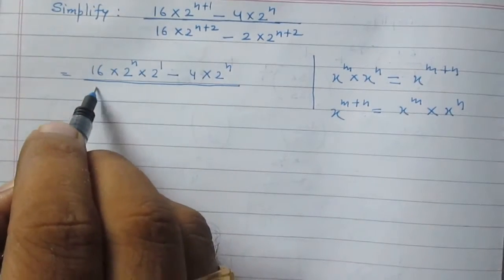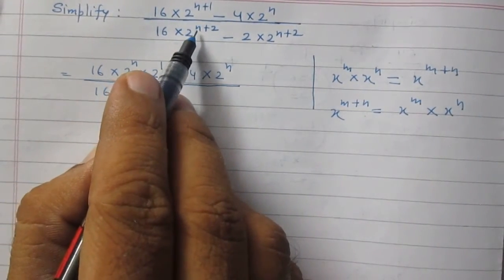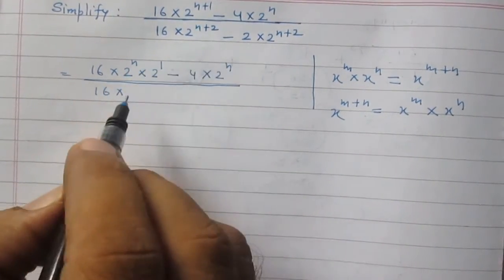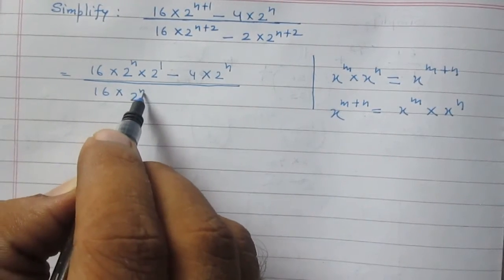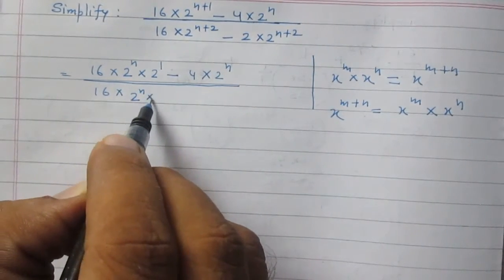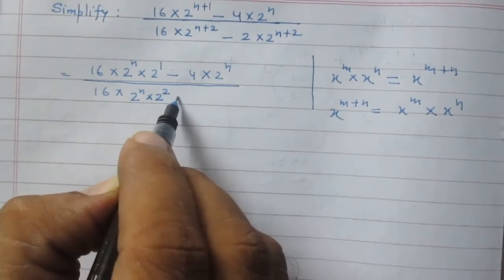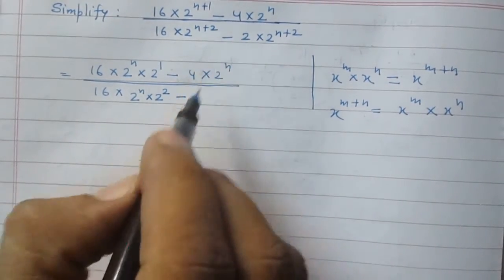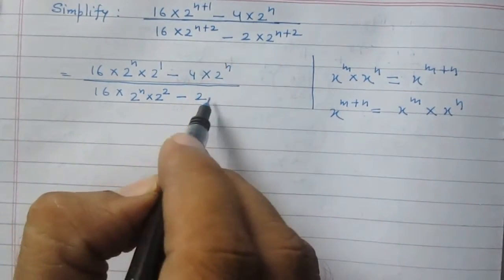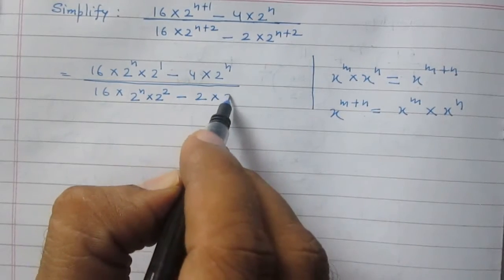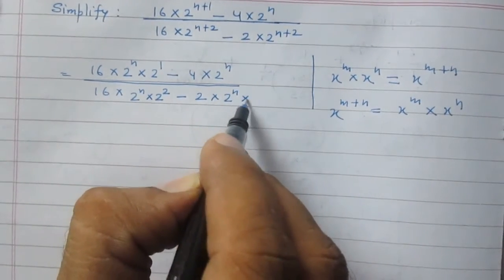The denominator is 16 multiplied by 2 raised to the power n plus 2, which can be written as 2 raised to the power n multiplied by 2 raised to the power 2, then minus 2 as it is, and 2 raised to the power n plus 2 is 2 raised to the power n multiplied by 2 raised to the power 2.